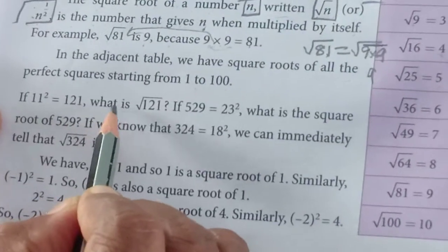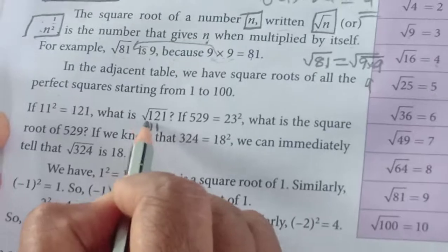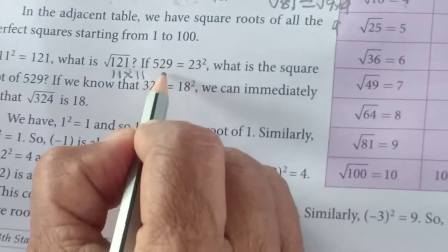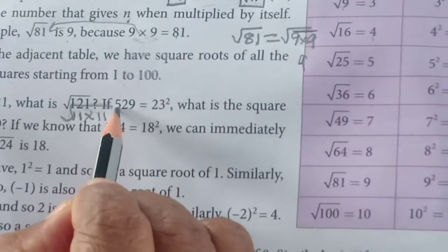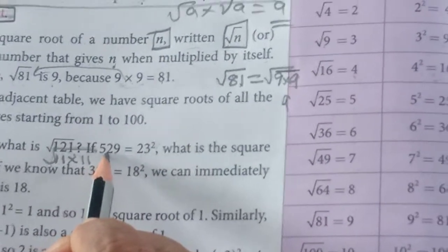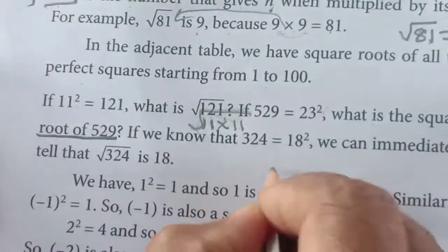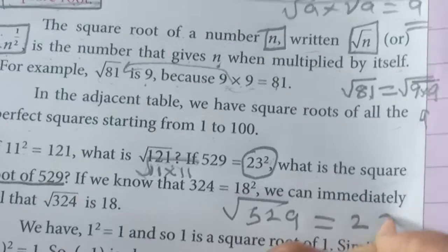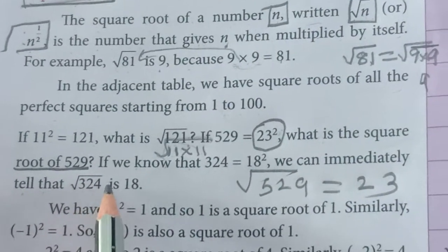Root 121 is 11. Next, 529 equals 23 squared. Then what is the square root of 529? Root of 529 is 23. If we know that 324 equals 18 squared, we can immediately tell that root of 324 is 18.